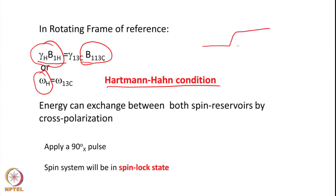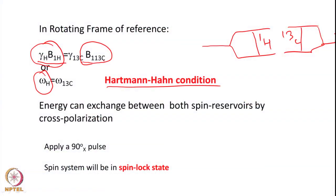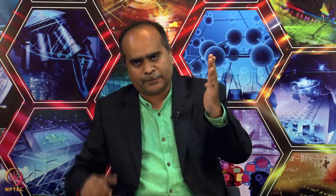To visualize: by applying this matching condition we match the energy gap of proton with that of carbon-13. By applying two RF pulses — one on proton, one on carbon-13 — in the rotating frame of reference, the frequencies of proton and carbon-13 will match. This Hartmann-Hahn matching condition leads to polarization transfer between proton and carbon. Energy exchange happens between both spin reservoirs by something called cross polarization — polarization coming from proton to carbon-13.